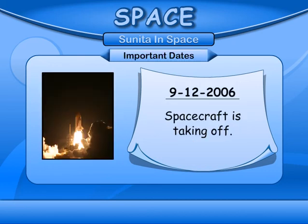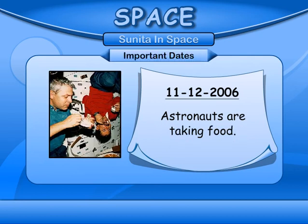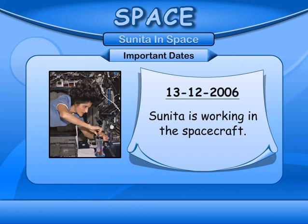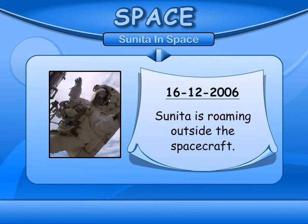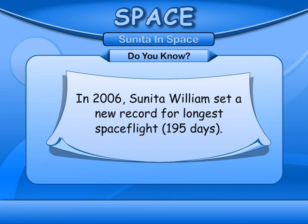Sunita Williams' mission timeline: On 9th December 2006, the spacecraft took off. On 11th December 2006, astronauts were floating inside the spacecraft and taking food. On 13th December 2006, Sunita was working inside the spacecraft. On 16th December 2006, Sunita was roaming outside the spacecraft. In 2006, Sunita Williams set a new record for the longest space flight of 195 days.